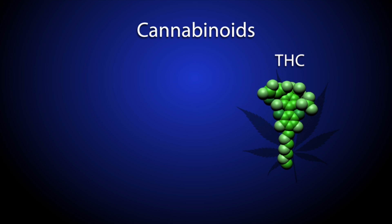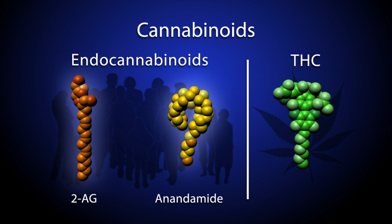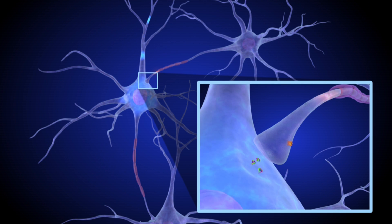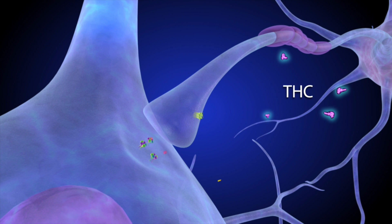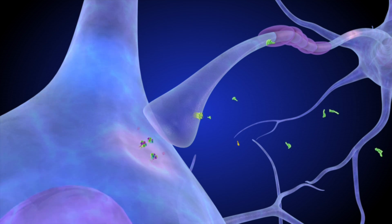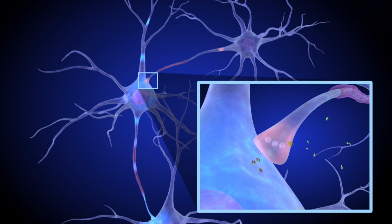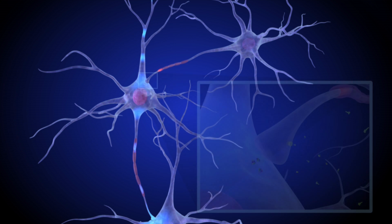Because THC is so similar to the brain's own endocannabinoids, such as anandamide or 2-AG, smoking marijuana directly affects the brain of the user. When someone smokes marijuana, THC molecules quickly reach the brain. There, THC competes with the brain's endocannabinoids to bind with cannabinoid receptors on neurons that regulate dopamine activity. Among other effects, THC reduces the release of GABA in the striatum. This reduction in turn causes nearby dopamine neurons to release more dopamine. Increased dopamine release produces the positive feelings of the marijuana high.